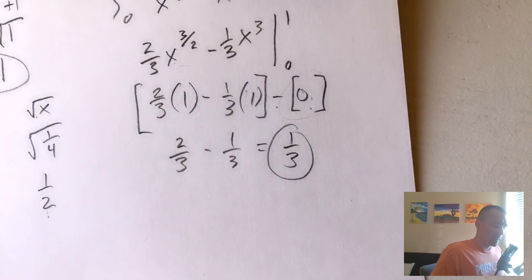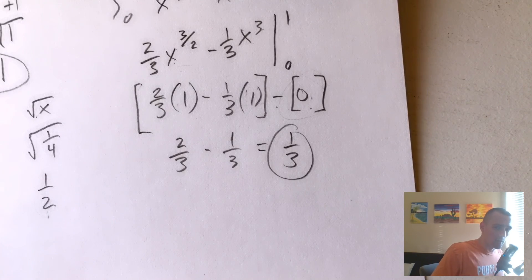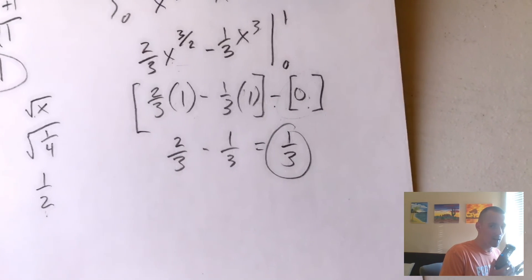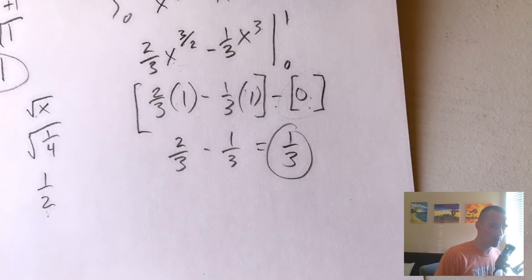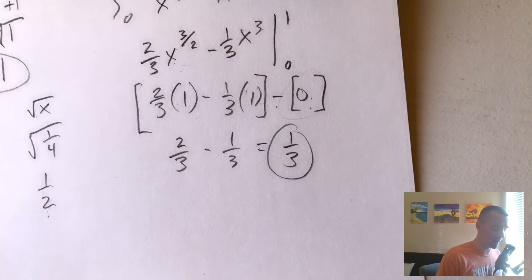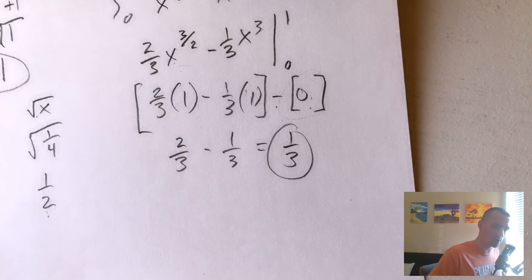So the area between those two functions is 1/3. This method and formula is covered on my calculus two study guide — there's a link in the description to download it. I hope you found this helpful; if you have any questions be sure to drop them in the comments below. Thanks and see you next time.